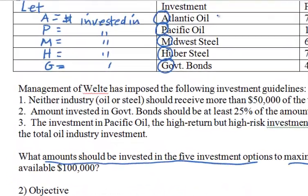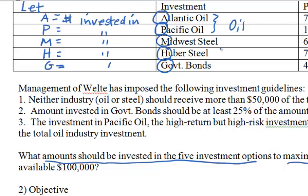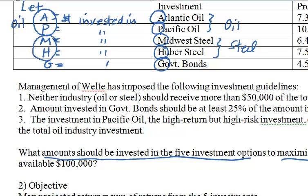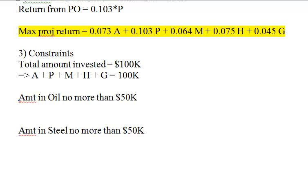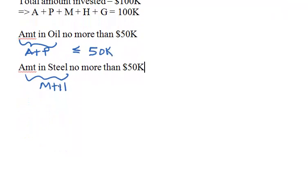There were two oil companies, so the oil industry amount is A + P. Similarly, the steel industry amount is the sum of the two steel companies: M + H. This gives us: A + P ≤ 50,000 and M + H ≤ 50,000.